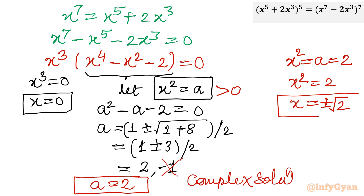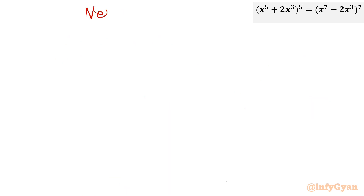So we have three solutions in total. Solution 1 is x = 0, and we also have x = +√2 and x = -√2. Let us verify all three to confirm they are not extraneous.